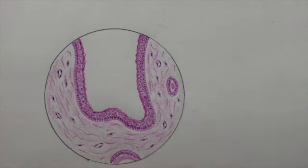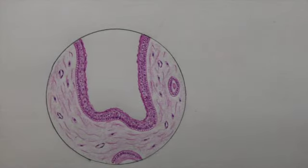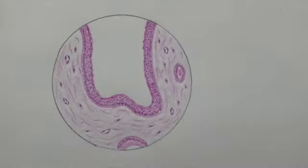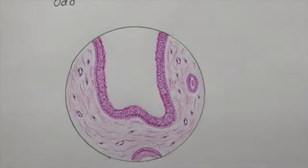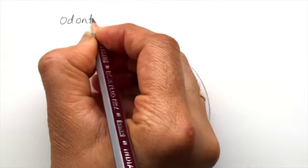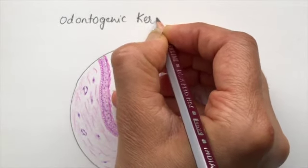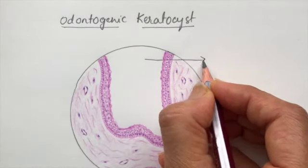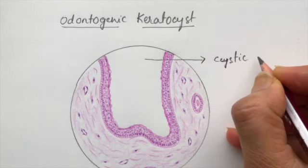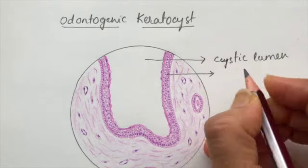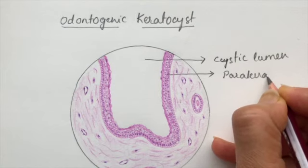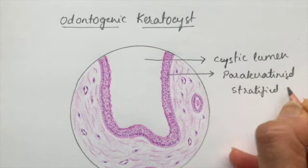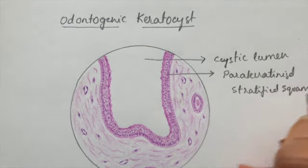So the first thing is it is odontogenic keratocyst. This is the cystic lumen. This is the stratified squamous parakeratinized epithelium.